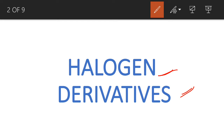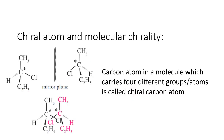In the last video, we covered the SN2 reaction — what it was, its mechanism, and its applications. Okay, in today's video we will cover optical activity, how it occurs, and what enantiomers and diastereomers are. So let's start.